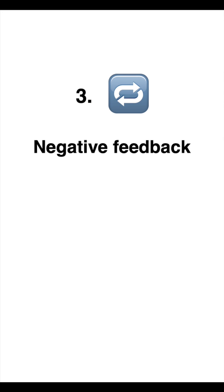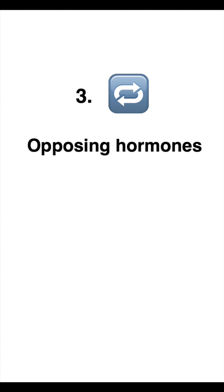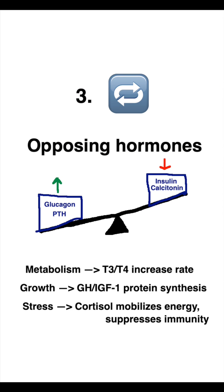Number three: feedback and effects. Negative feedback is most common — for example, T3 and T4 inhibiting TRH and TSH. Opposing hormones are key: insulin lowers blood sugar while glucagon raises it; calcitonin lowers blood calcium while PTH raises it. Know how hormones affect metabolism, growth, and stress responses.